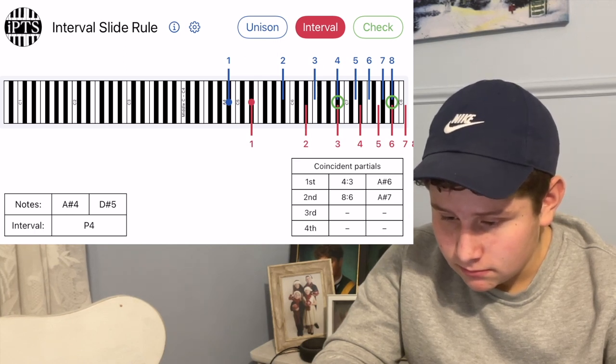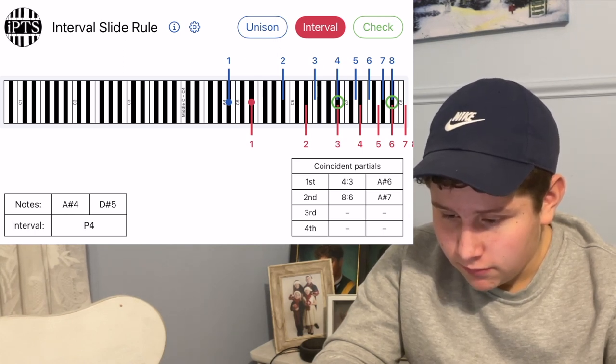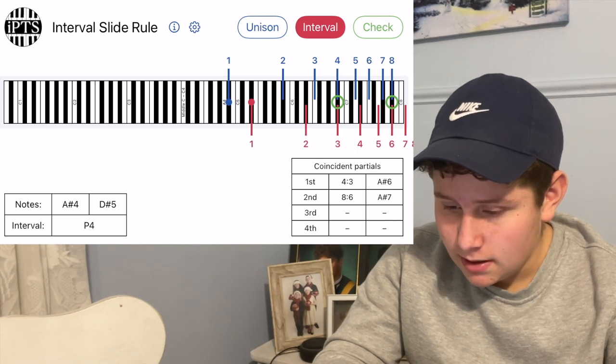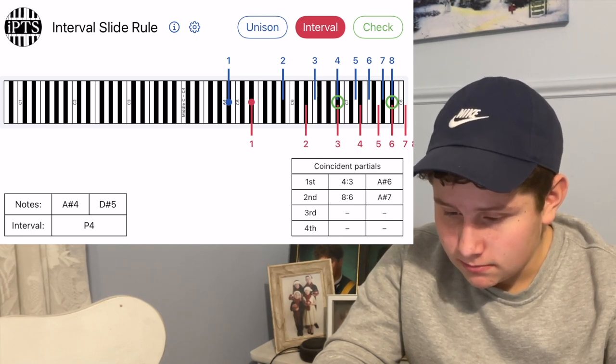Okay, now where is the first coincident partial? That's the first circle. 4-3. It's a 4-3. And what's the note? A-sharp 6. A-sharp 6. Okay, excellent.